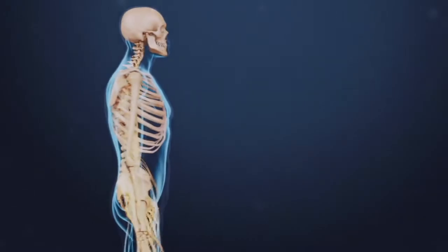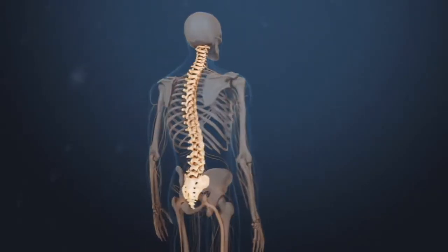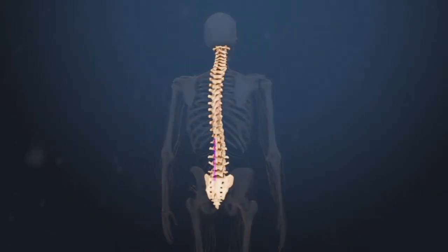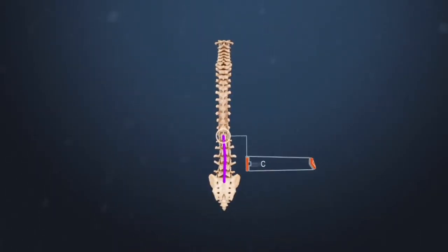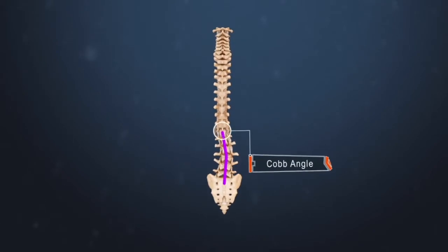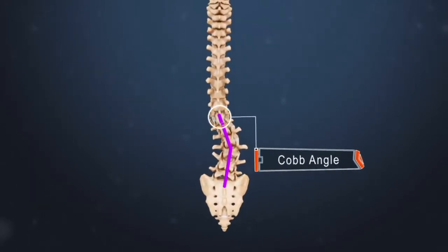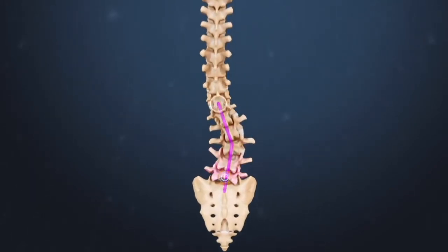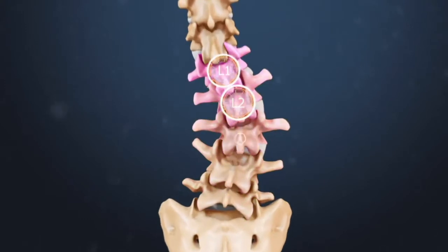Degenerative scoliosis, also known as adult-onset scoliosis, is a sideways spinal curve with at least a 10-degree Cobb angle caused by spinal degeneration. It most commonly occurs in the lumbar spine.